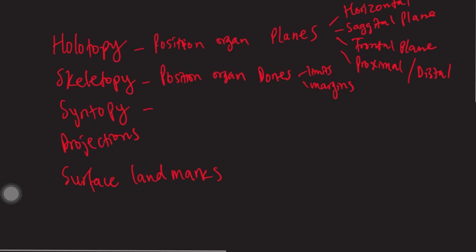So, syntopy, this is the position of the organ of the body in relation to the different layers of the body. Alright, of course, starting with the skin, and then the subcutaneous fat, and then the superficial fascia, fascia superficialis.